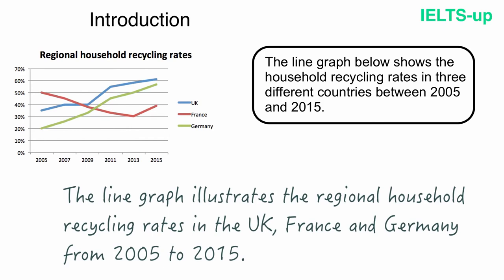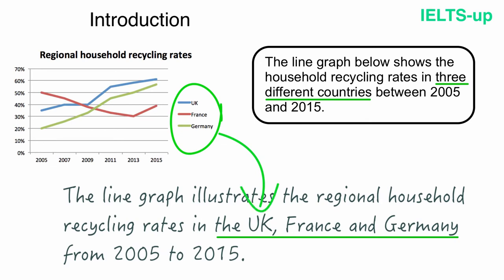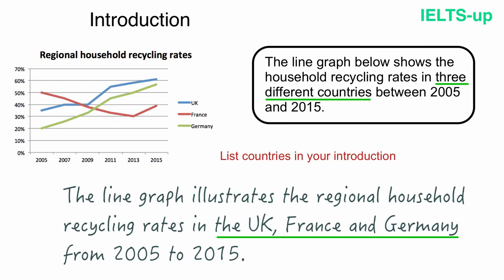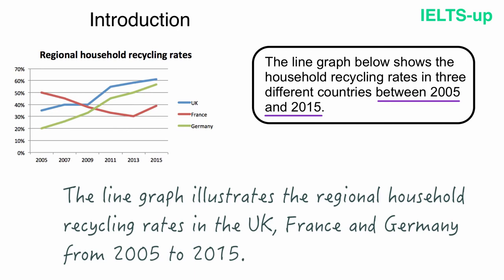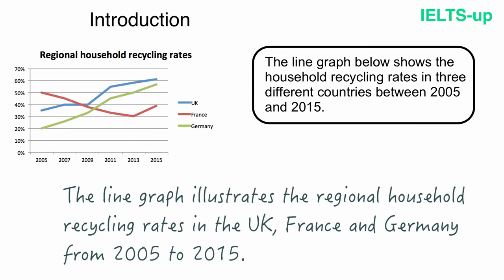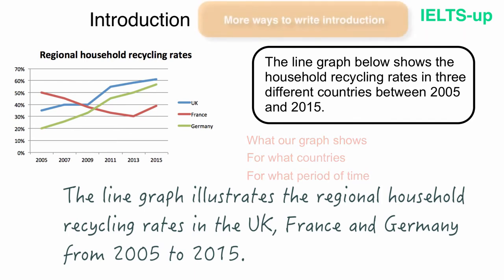After that, I list the countries. Instead of simply saying 'three countries,' I give the specific names: the UK, France and Germany. It's a very good technique to be specific when introducing the graph — always try to list countries in your introduction. Finally, I changed 'between 2005 and 2015' to 'from 2005 to 2015.' That's all with our introduction — it's absolutely clear and accurate. Anyone who reads it will know what the graph shows, for what countries and for what period of time.